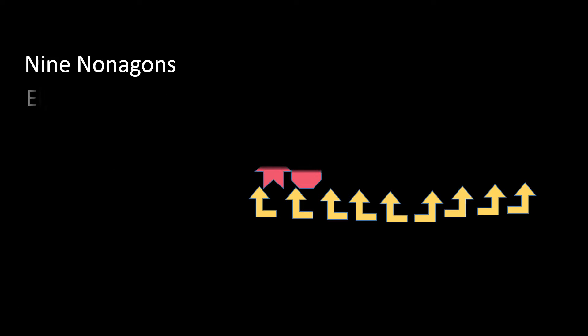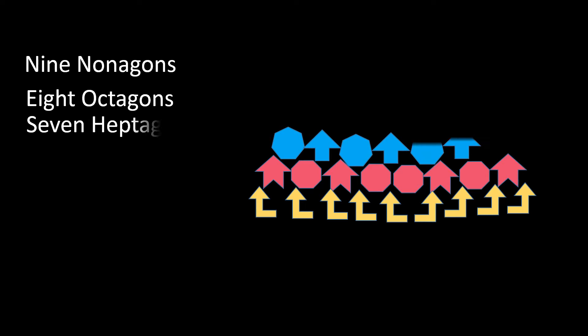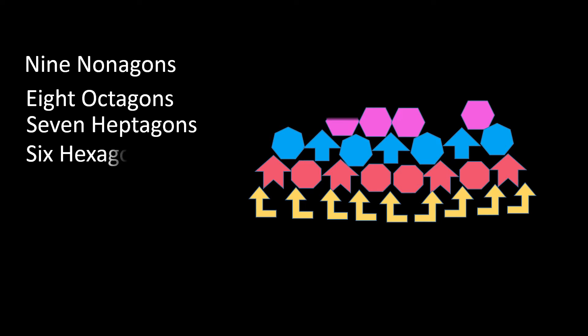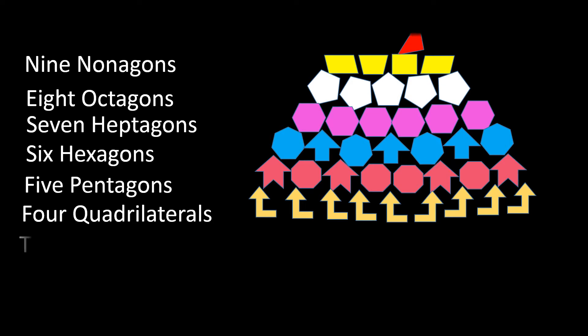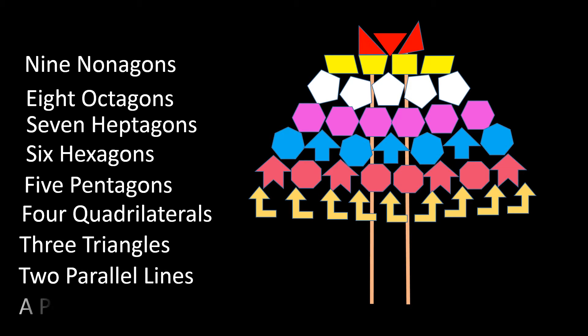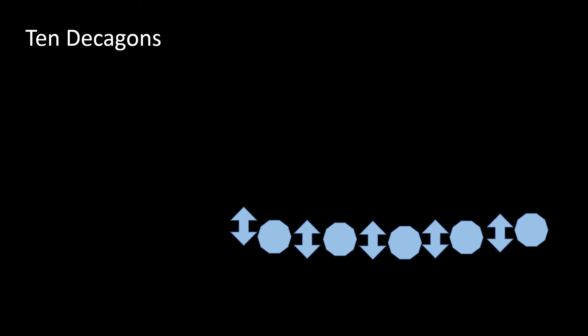On the ninth day of geometry, my teacher gave to me nine nonagons, eight octagons, seven heptagons, six hexagons, five pentagons, four quadrilaterals, three triangles, two parallel lines, and a point on a line in a plane.